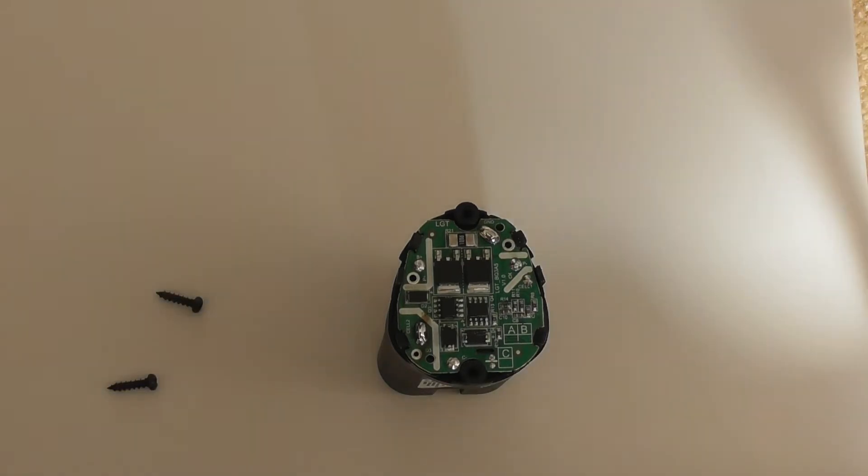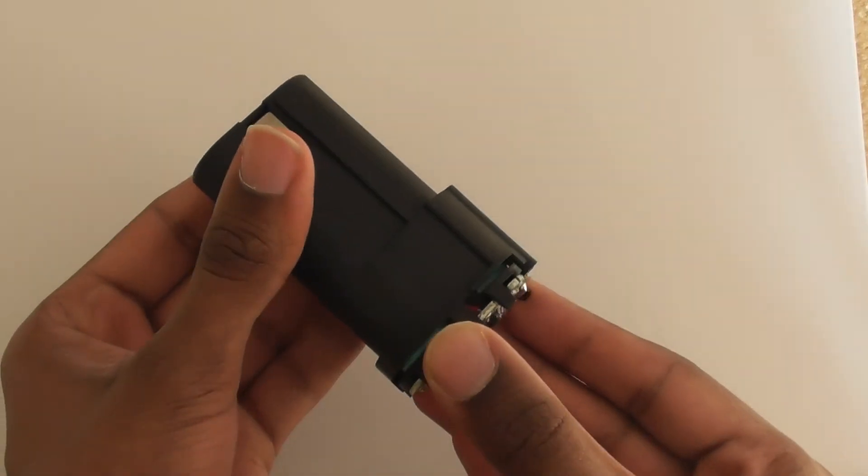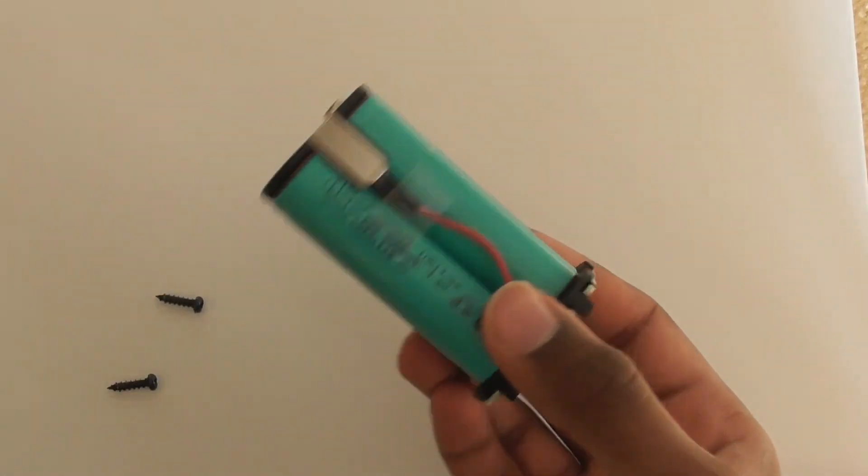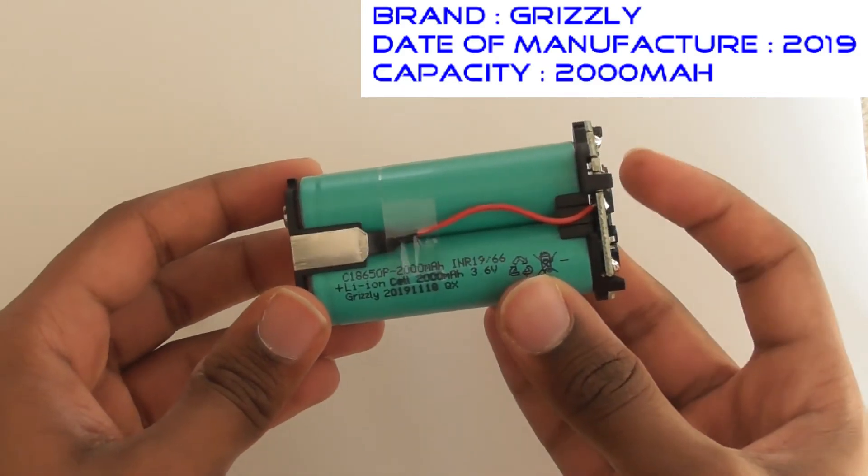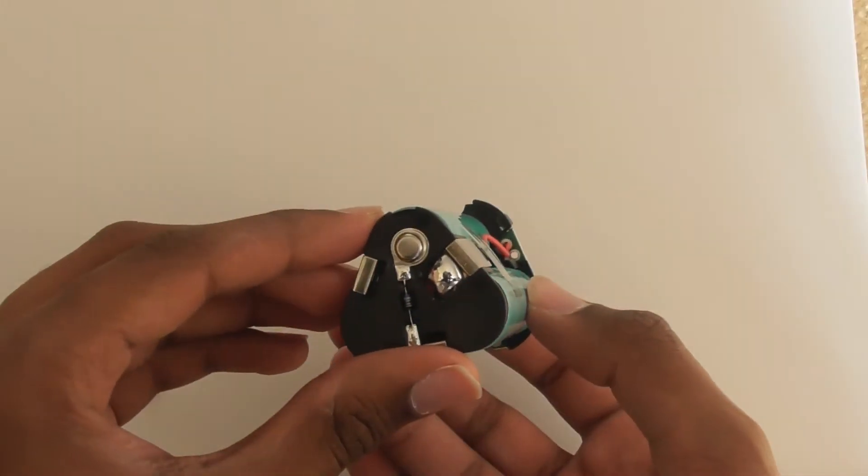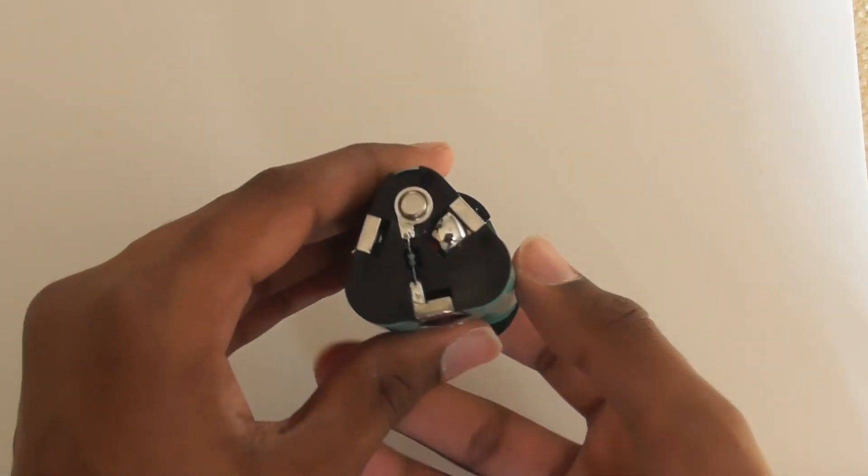And then if we pull this out, you can see the lithium batteries made by Grizzly, and they're 2000 mAh each, which is 2 amp hours. If we look, this battery has also got an ID tab.